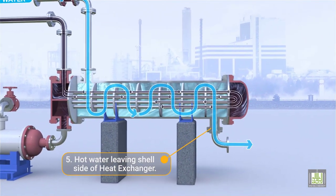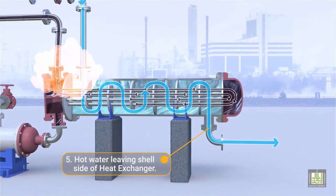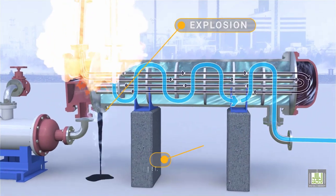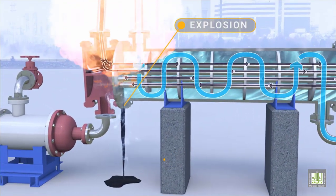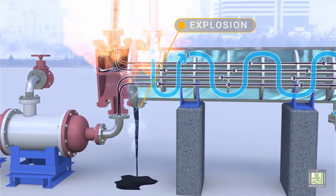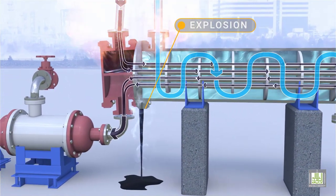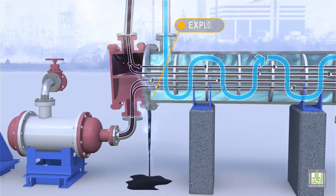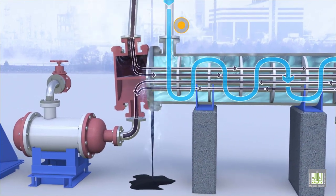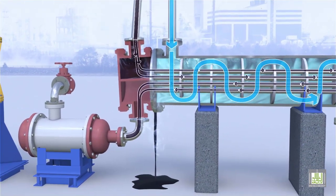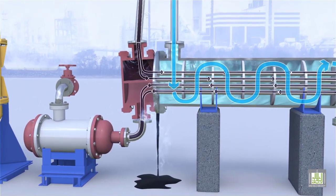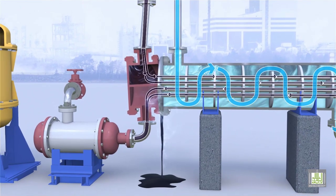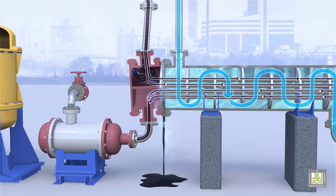The heat exchanger is typically provided with low or high point vents to remove water from tubes or the shell. Uncontrolled mixing of water with hydrocarbons can generate high pressure conditions and can damage systems that are not equipped with pressure relief devices.